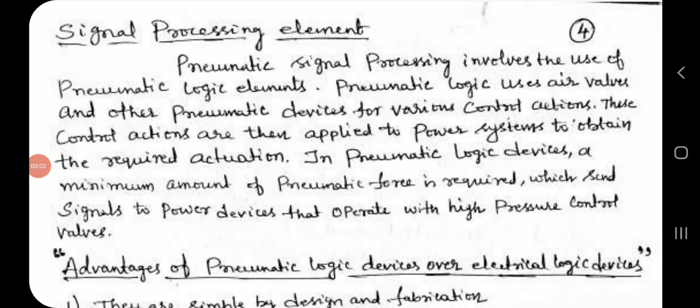Signal processing element. Pneumatic signal processing involves the use of pneumatic logic elements. Pneumatic logic uses air valves and other pneumatic devices for various control actions. These control actions are then applied to power systems to obtain the required actuation. In pneumatic logic devices, a minimum amount of pneumatic force is required.